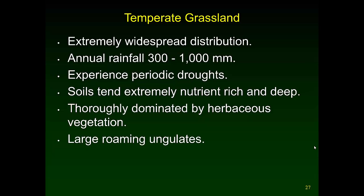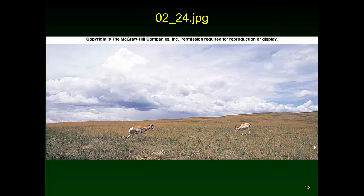Because it's a temperate area, it has winters below freezing. There are large herds of roaming ungulates — in North America these were initially bison, which have since been replaced by cattle. This North American temperate grassland is home to the pronghorn antelope — North America's only antelope and its fastest land animal. You'll find it out in the Great Plains, in areas like eastern Colorado, western Nebraska.